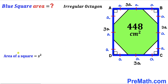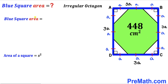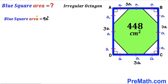Let's recall the area of a square formula: area equals s squared, where s is the side length. In our case the side length is 3a, so the blue square area equals (3a)² = 9a². Thus the blue square area is 9a².